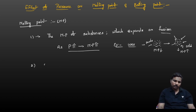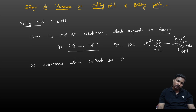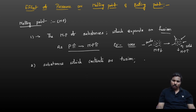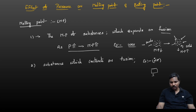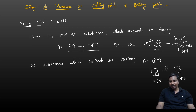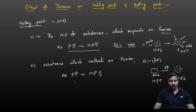For substances which contract on fusion — for example, ice — as pressure increases, solid particles become smaller and it melts more easily. So melting point decreases as pressure increases. These are very important points.